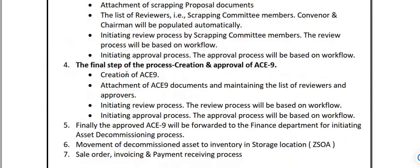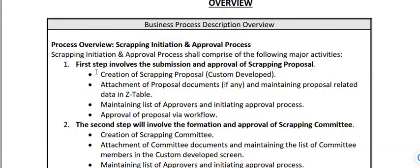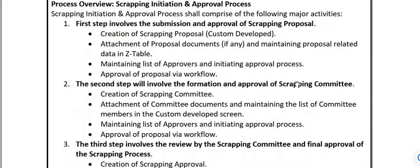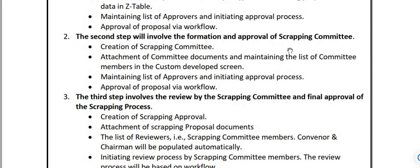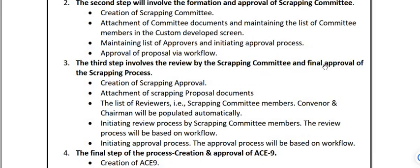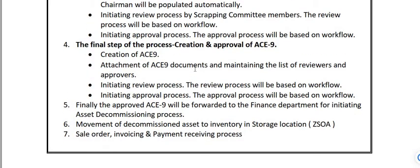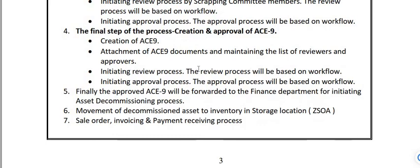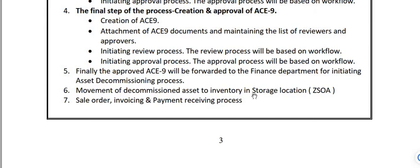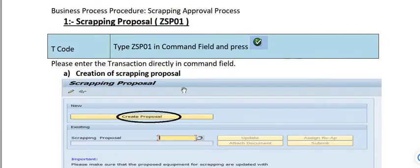This decommissioning process comprises seven steps. Step one involves the submission and approval of a scrapping proposal. Step two involves the formation and approval of a scrapping committee. Step three involves the reviewing of the scrapping committee and final approval. Step four is the creation and approval of AC9. Step five is forwarding the approved AC9 to the finance department to initiate the asset decommissioning process. Step six is movement of the decommissioned asset to inventory storage location for ZSOA material type. Step seven is sales order creation, invoicing, and payment saving process.